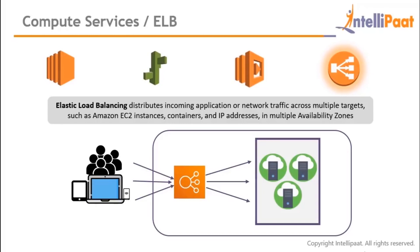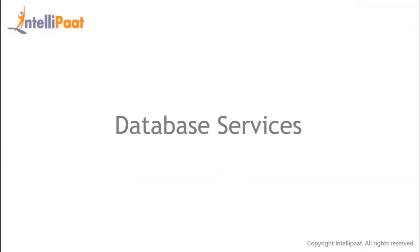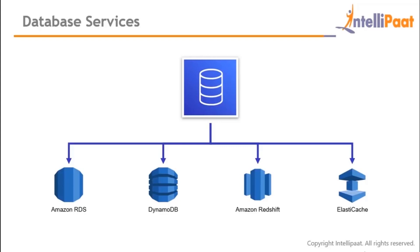Elastic Load Balancing (ELB) distributes incoming application or network traffic across multiple targets — such as EC2 instances and IP addresses — across multiple availability zones and geographic regions. When 10 users access a website, ELB directs them to one EC2 instance. When 100 users access it simultaneously, ELB divides them into 10 groups and redirects each group to a different EC2 instance, preventing the web server from crashing.